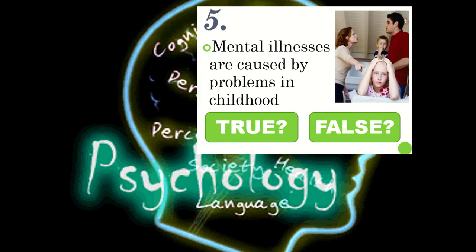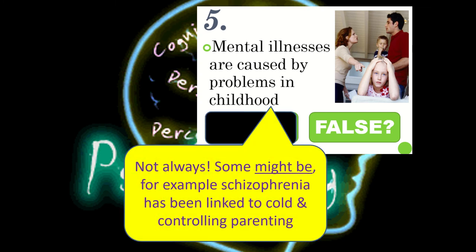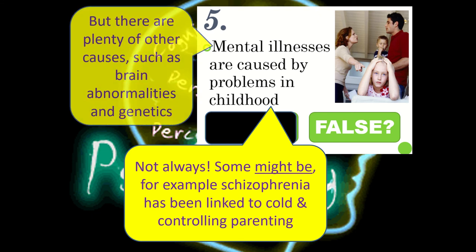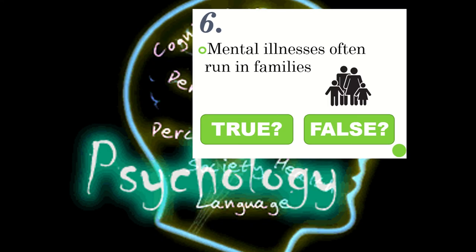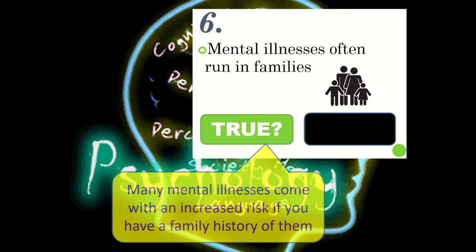Statement 5: mental illnesses are caused by problems in childhood — this is false. Some might be, but not always the case. Some people argue that schizophrenia could be linked to quite cold or domineering parents in childhood, but not all mental illnesses have anything to do with problems in childhood. There are a number of mental illnesses now which are not down to the way you've been raised, but are instead down to your genetics and specific brain abnormalities, which leads us into statement 6: mental illnesses often run in families. If mental illnesses are in your genes, then this statement must be true.